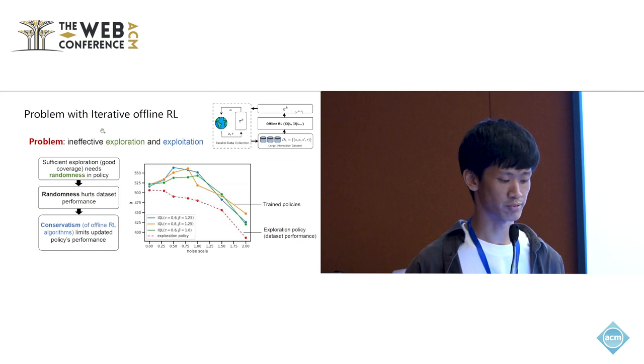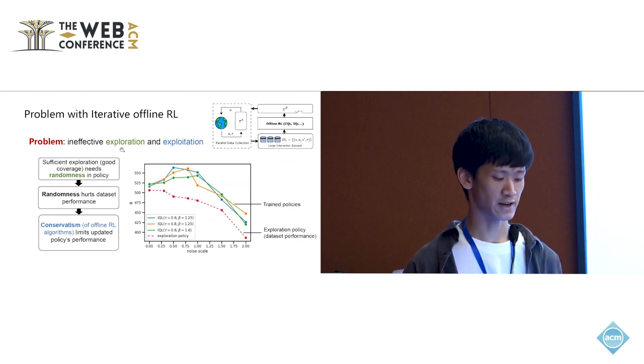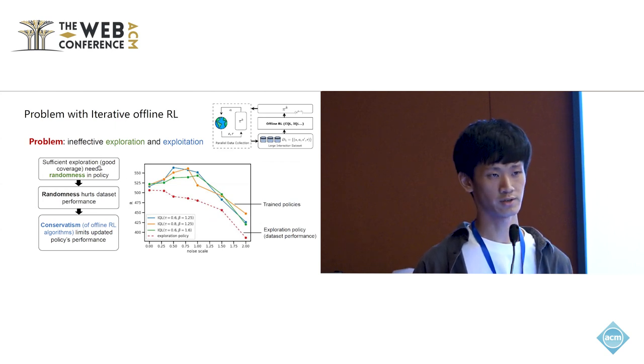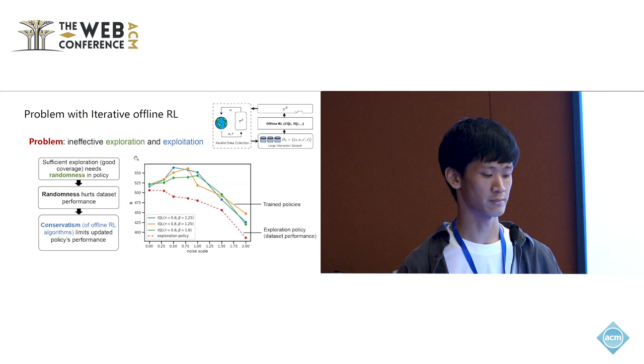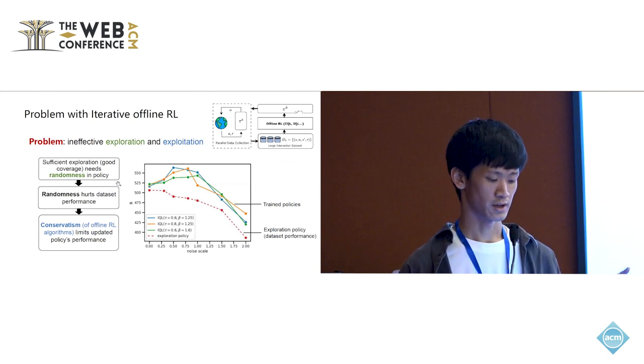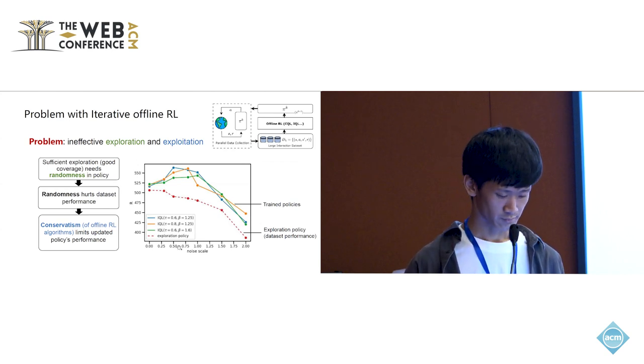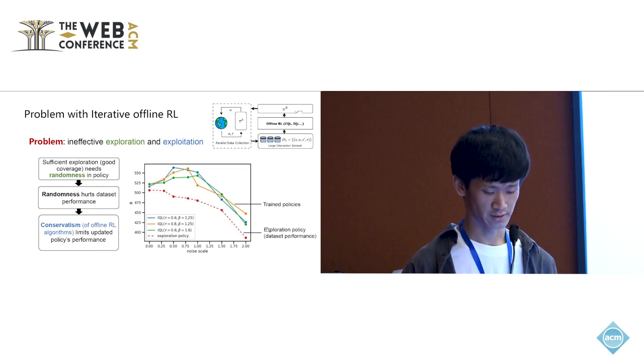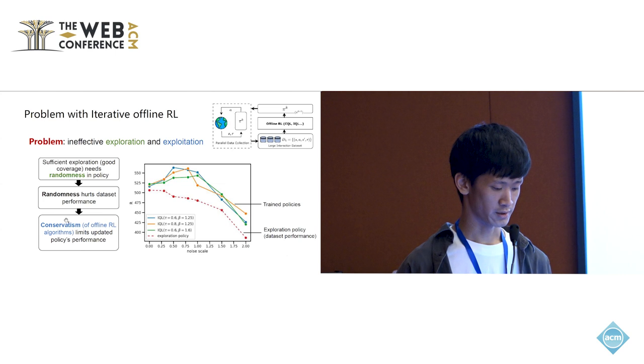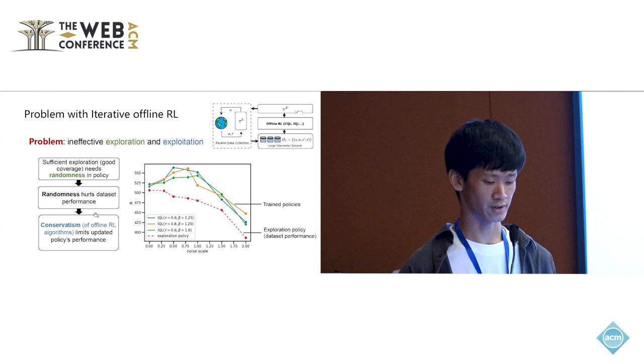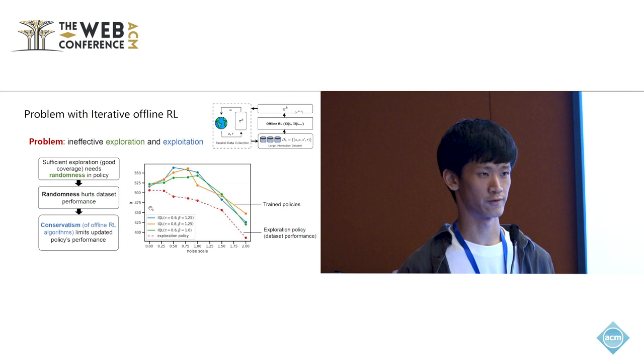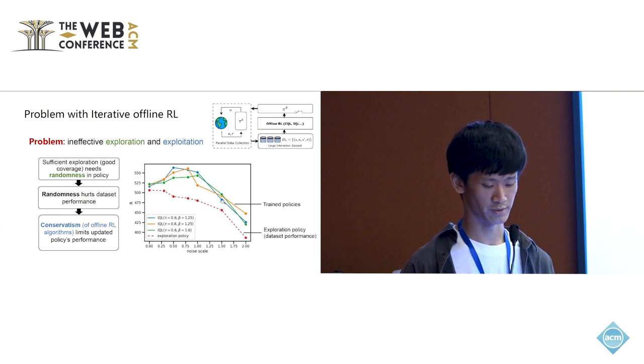But in this work, we observed a severe problem with this iterative offline RL approach that is the ineffective exploration and exploitation. During exploration, we want to collect a dataset that can cover a wide range of states and actions in the environment. This often needs some randomness in the policy. But a random policy usually does not perform well. As you can see in this plot, as the noise scale grows, the exploration policy's performance decreases. Moreover, offline RL algorithms are often conservative, which means that the policy trained by offline RL algorithms will somehow imitate the behaviors inside the training dataset. If our dataset is full of sub-optimal behaviors or low-quality behaviors, this will also limit the trained policy's performance. In this plot, the trained policy's performance is also decreasing.